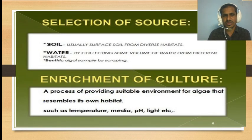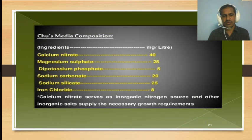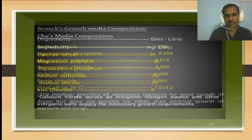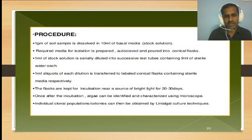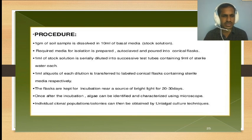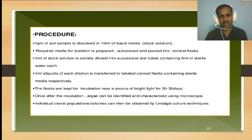For soil enrichment, soil is sometimes used. The medium contains calcium nitrate, magnesium sulfate, dipotassium phosphate, sodium carbonate, sodium silicate, and iron chloride. Calcium nitrate serves as an inorganic nitrogen source; other inorganic salts supply necessary growth requirements. For the procedure: 1 gram of soil sample is dissolved into 10 ml of basal media, required media is prepared and autoclaved, after which 1 ml of stock solution is serially diluted into successive tubes of 9 ml sterile water each. One ml of each dilution is transferred into labeled flasks, and the flasks are kept in an incubator under bright light for 20 to 30 hours. Once incubation is complete, they are identified under a microscope.